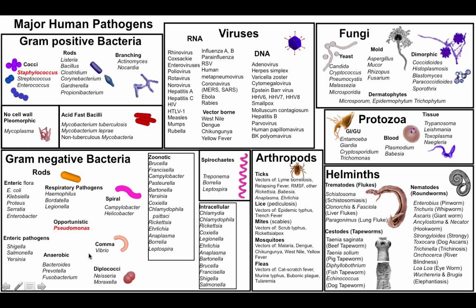We also frequently see Pseudomonas, which is a gram-negative rod. Some other ones that may come up include Enterococcus among the gram-positive cocci, and Clostridium — specifically Clostridium difficile — among gram-positive rods. Other gram-negatives you may see are E. coli, Klebsiella, Proteus, Serratia, and Enterobacter. And in the group of fungi, Candida species can also be involved in healthcare-associated infections.